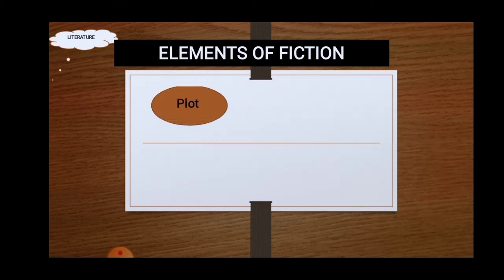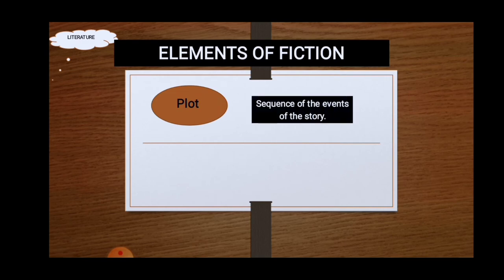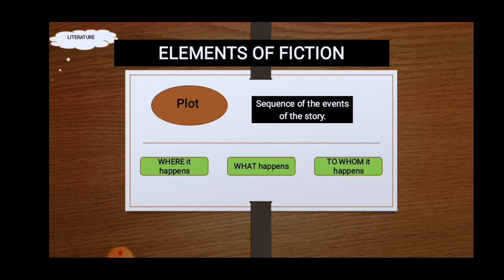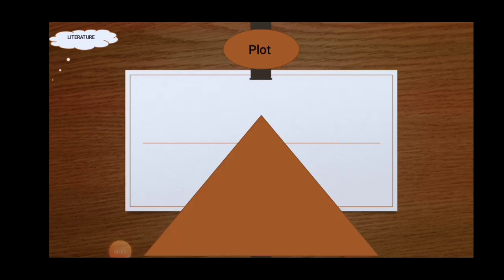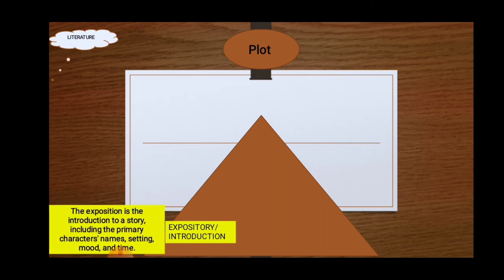Next is plot. Plot is the sequence of events of the story. Where it happens, what happens, and to whom it happens. So the plot has structures. The first structure of plot is expository or introduction. The exposition is the introduction to a story including the primary characters' names, setting, mood, and time. In other words, introduction here, the character's name or the setting have been revealed already.